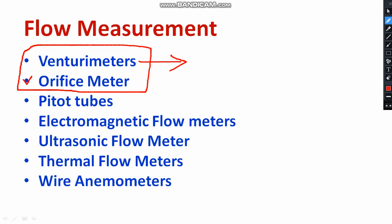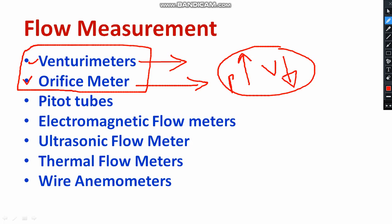If I talk about the orifice meter, it works based on a suitable instrument which creates a pressure drop. You are keeping the orifice meter vertical, along with the particular fluid flow, meaning fluid will be passing perpendicular to the orifice meter. If the pressure increases, the velocity of the fluid comes down. This is the basic principle of orifice meter.